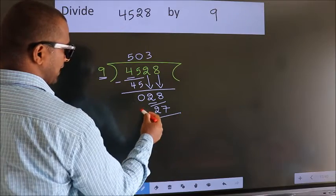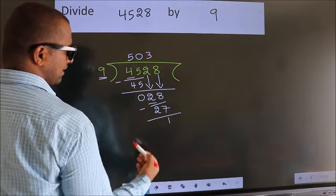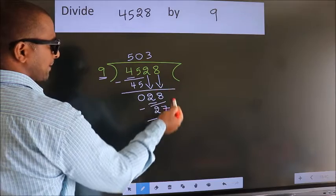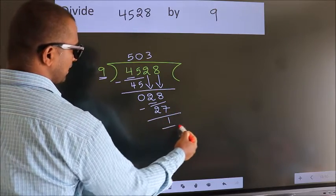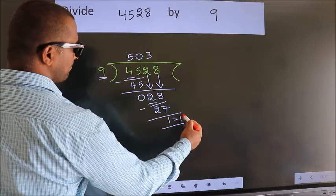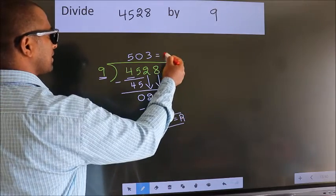Now we subtract. We get 1. No more numbers to bring down, so we stop here. This is our remainder. This is our quotient.